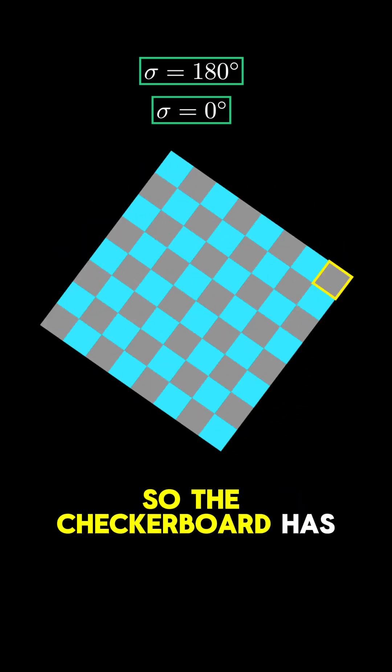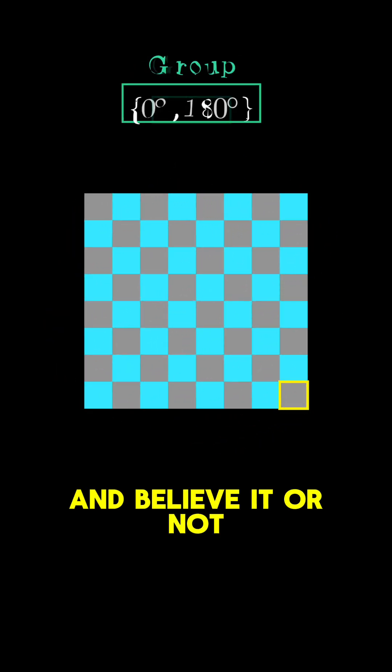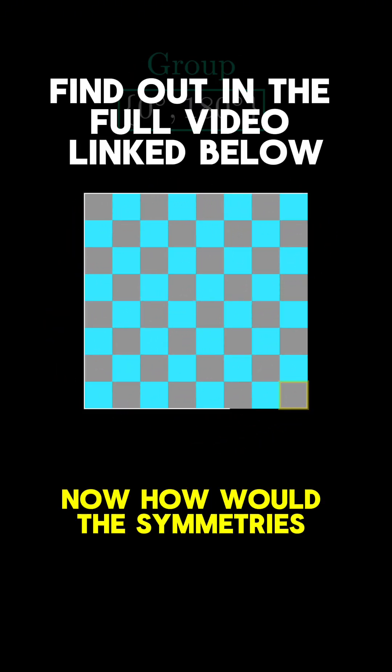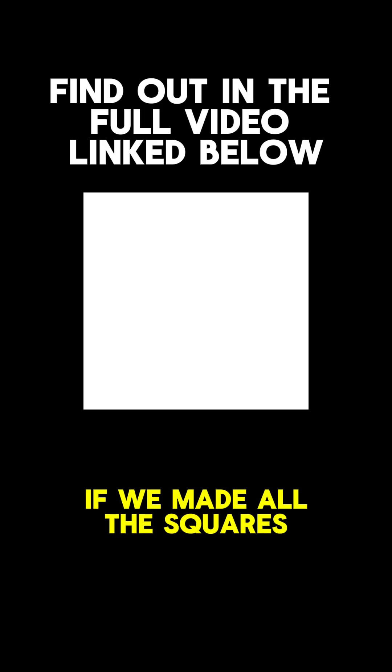So the checkerboard has only two symmetries. And believe it or not, this small collection is already a group. Now how would the symmetries change if we made all the squares the same color?